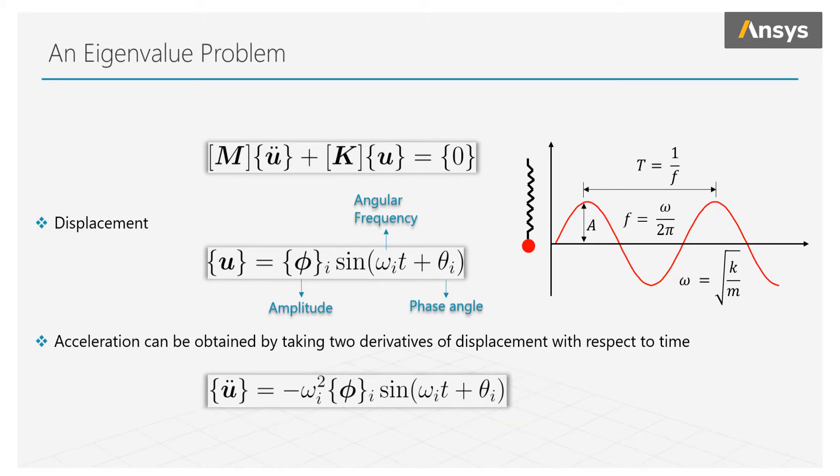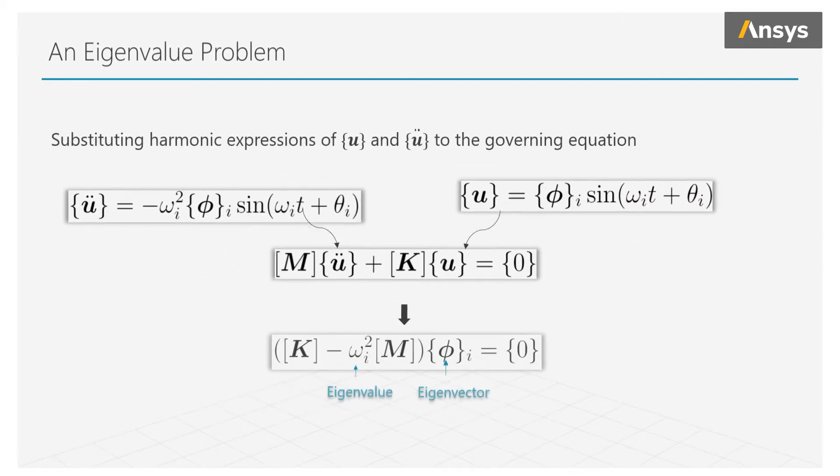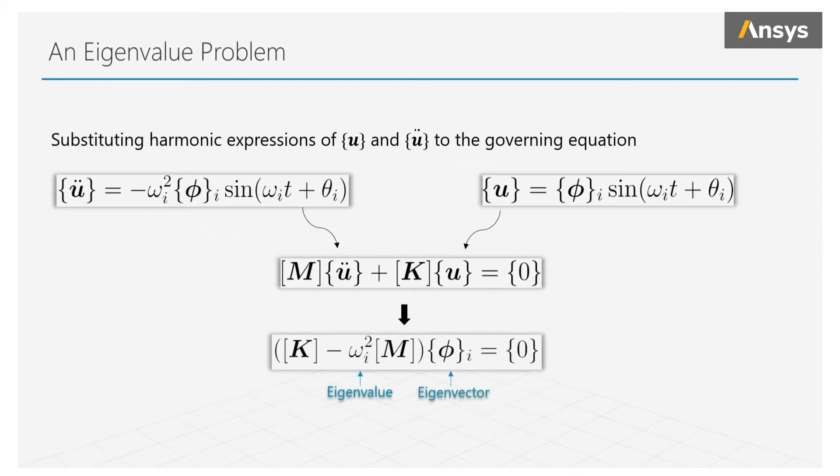Previously, our unknowns were displacement and acceleration, but now we transformed them so our unknowns are the amplitude phi, the angular frequency omega, and the phase angle theta. Let's replace displacement and acceleration with these harmonic equations by substituting our harmonic expression into the governing equation of motion. We will find that the sinusoidal terms for phase angle are dropped, and the equation of motion is now simply in terms of only angular frequency omega and amplitude phi.